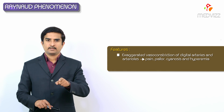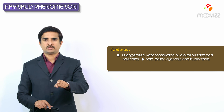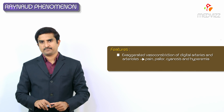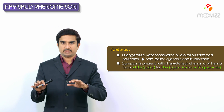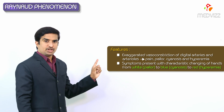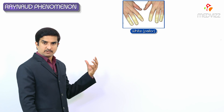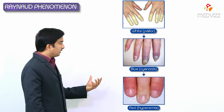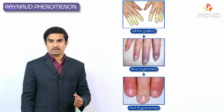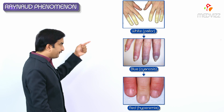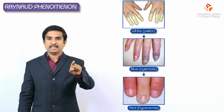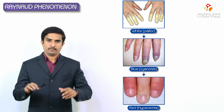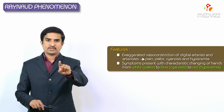This vasoconstriction produces pain, pallor, cyanosis, and hyperemia — these are the characteristic features. The symptoms present with a characteristic color change of the hands: from white (pallor) to blue (cyanosis) and finally to red (hyperemia). Note that all three phases may not be seen in every individual.